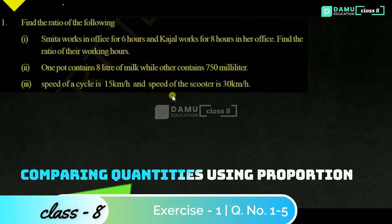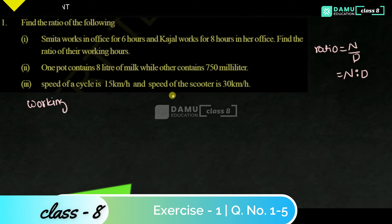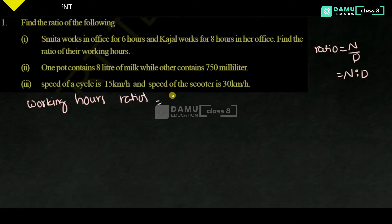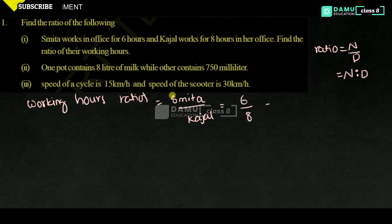So, what is meant by ratio? Ratio can be written as numerator by denominator, that is numerator is to denominator. We will write the working hours ratios. Smither by Cajal — Smither is 6 hours, Cajal is 8 hours, that is 6 is to 8.